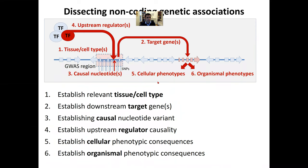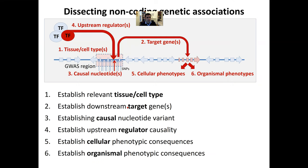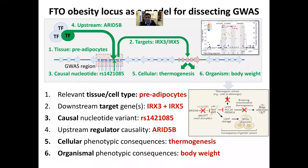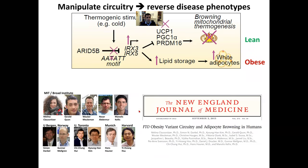Ultimately, what we want to do is go back to these regions of association and infer what are the relevant tissues and cell types, what are the target genes, what are the causal nucleotides, who are the upstream regulators, what are the cellular phenotypes, and what are the organismal phenotypes. We've carried out this in the FTO locus to basically go from a region of association to a complete circuitry where we know the upstream regulator, we know the SNP responsible for the association, we know the downstream target genes, and ultimately the cellular and organismal processes that result. This was a beautiful collaboration with Melina Klauss and Cher and many other people.